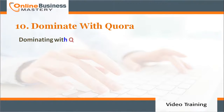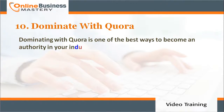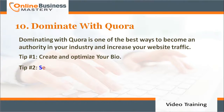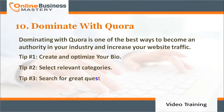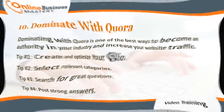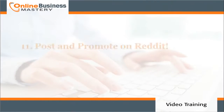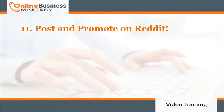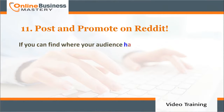Number ten: dominate with Quora. Dominating Quora is one of the best ways to become an authority in your industry and increase your website traffic. Tips: number one, create and optimize your bio; number two, select relevant categories; number three, search for great questions; number four, post strong answers.